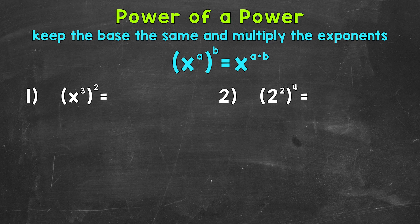For these, we keep the base the same and then multiply the exponents. For example, if we have x to the power of a to the power of b, that's going to equal x to the power of a times b. Let's jump into our examples and see exactly how this works.